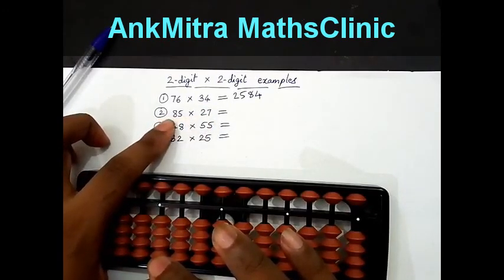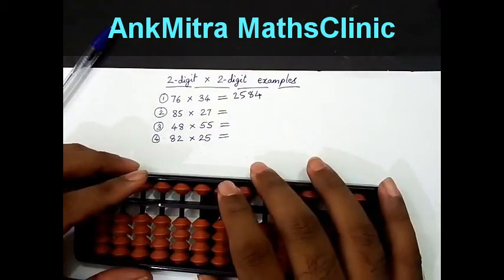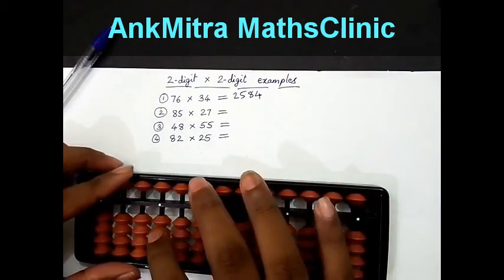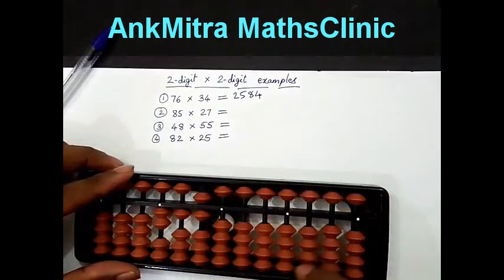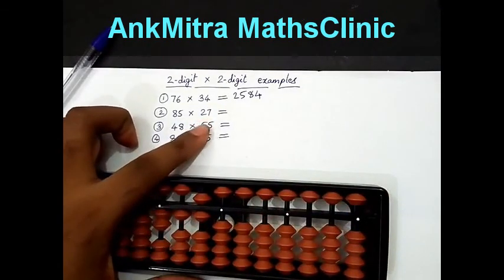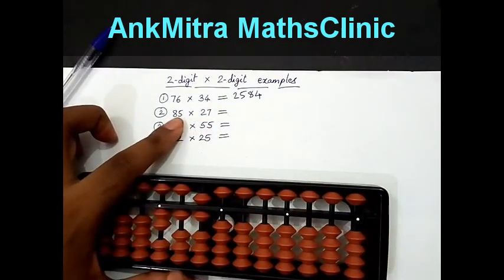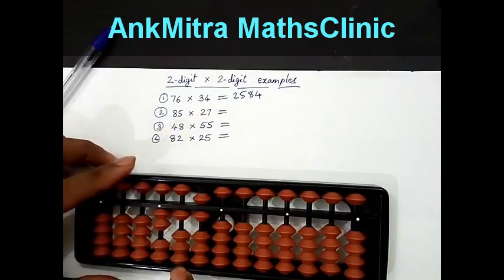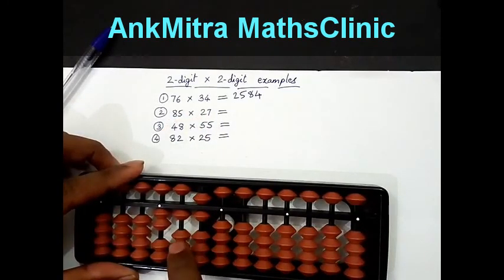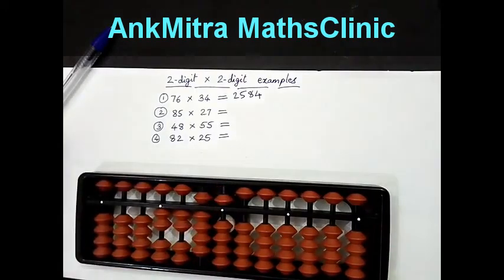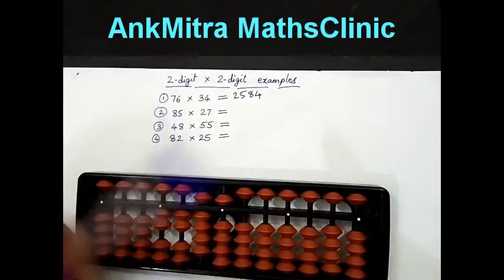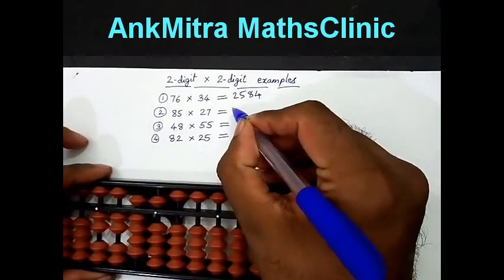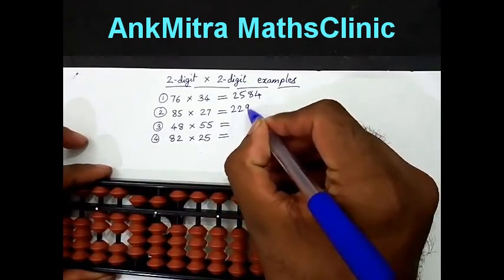Take 27 entirely and then 27 multiplied by 8 mentally. 27 multiplied by 8 gives me 216. 216 I will take from the 4th rod: 2, 1, 6. The next number will be 27 multiplied by 5 which I will add from the 3rd rod. 27 multiplied by 5 is 135 which I will add from the 3rd rod: 1, 3, 5 and our answer is ready. The answer is 2295.